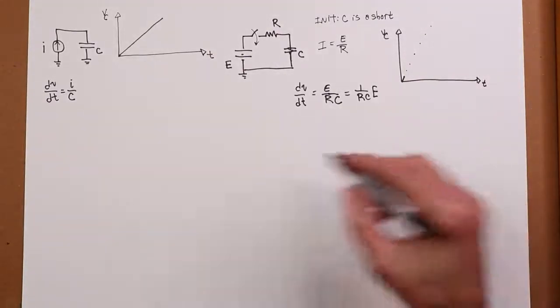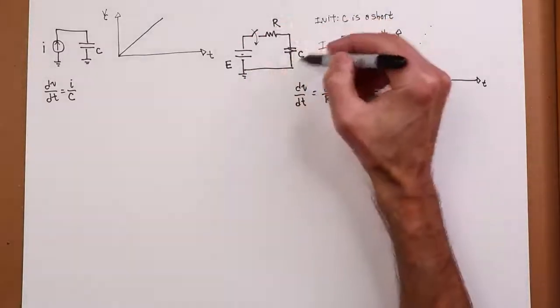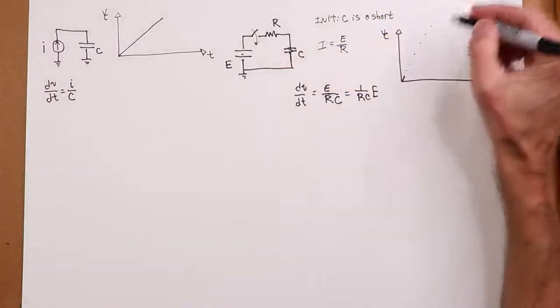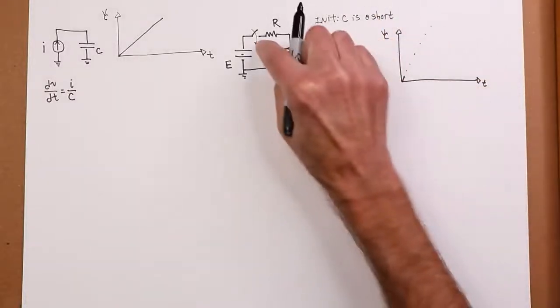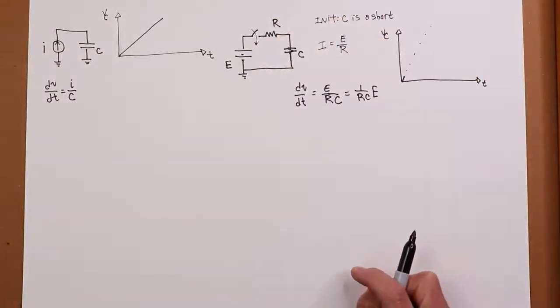But that's not what's going to happen here, because once this current starts to flow, the capacitor voltage starts to build. And as the capacitor builds, KVL says voltage across the resistor has to drop.